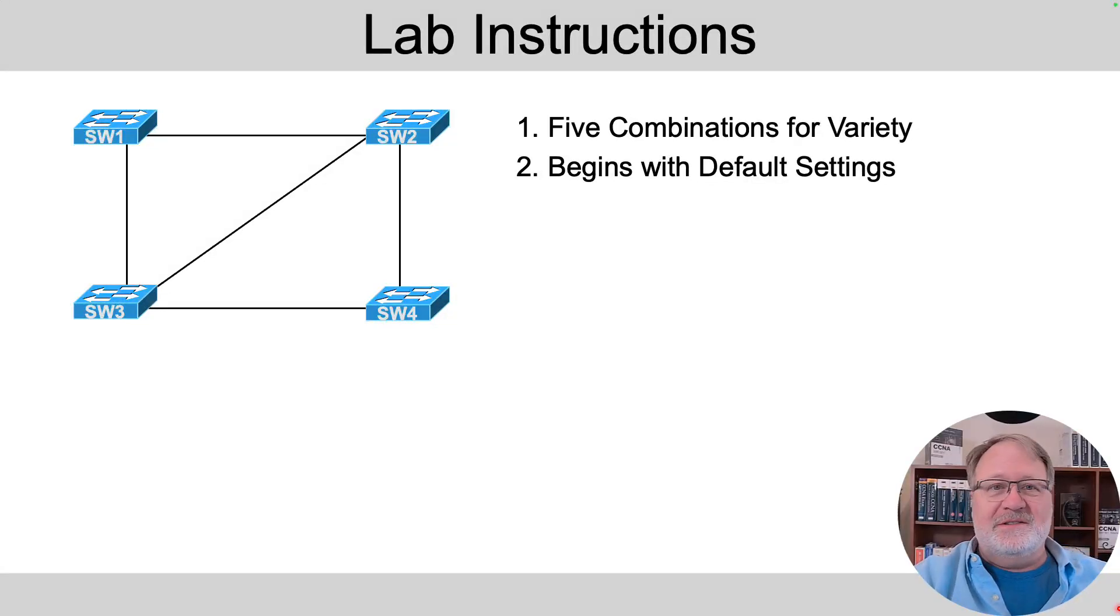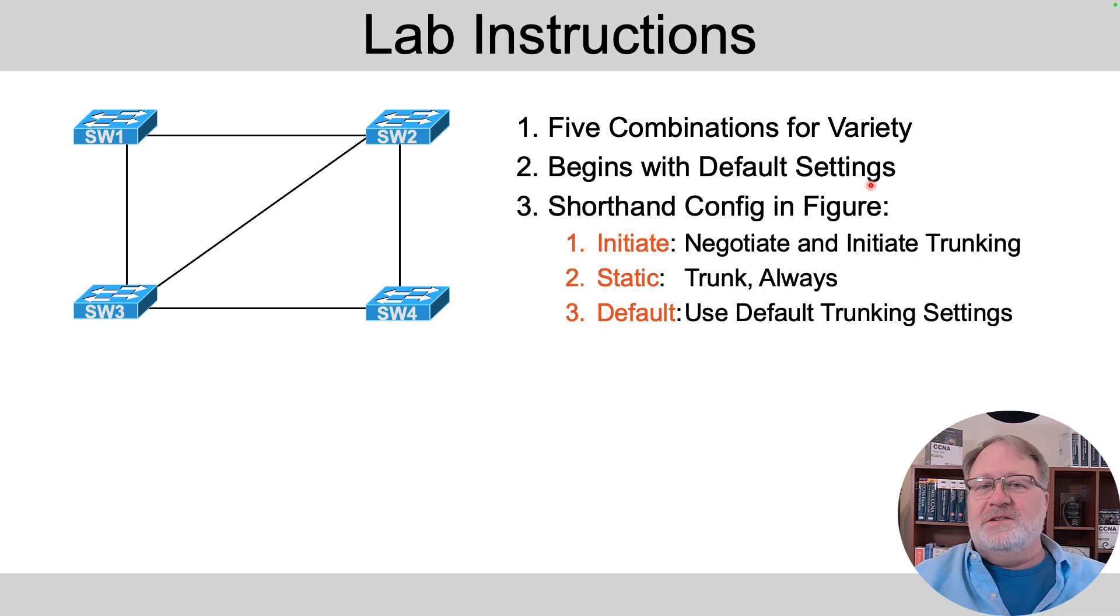So let me walk you through the instructions. It's just a lab with five different combinations for variety, no other reason than that. And as I just talked about, it's all default settings in relation to trunking to start the lab. So in this figure, I'm going to overlay some words. Initiate means we want to have that interface dynamically negotiate the use of VLAN trunking. To initiate the process, static means we always want that port to trunk, and default means to use default VLAN trunking settings.